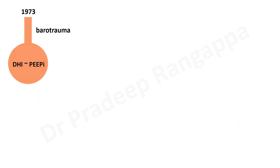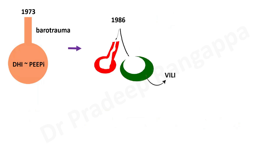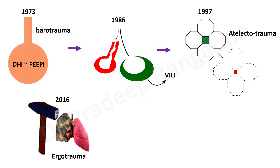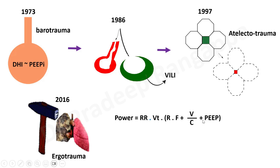Looking at all these injury types by year: 1973 — barotrauma emphasized; 1986 — volutrauma emphasized; 1997 — atelectotrauma; 2016 — ergotrauma. Mechanical power is a new nomenclature introduced in 2016. The variables influencing mechanical power include respiratory rate, tidal volume, resistance, flow, compliance, volume, and PEEP. Each of these factors is attributed to certain types of injury.